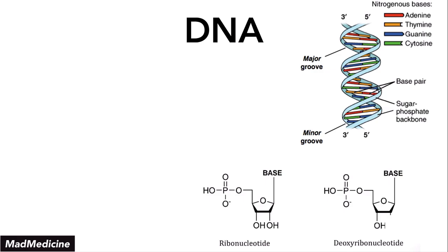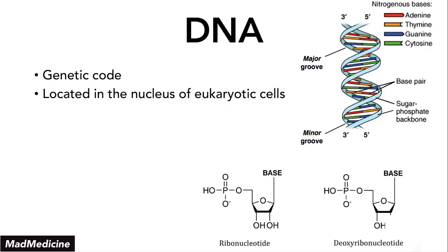DNA is very important. It is essentially your genetic code. It is important because it makes up the basis of everything in your body. Nothing can happen without DNA because your DNA tells every cell how to behave and how to function. DNA is mainly located in the nuclei of eukaryotic cells. There are exceptions — there is also DNA found in mitochondria, known as mitochondrial DNA.